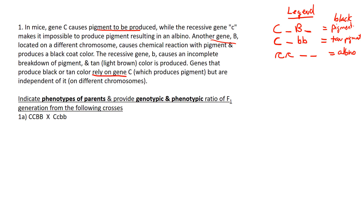It says that genes producing black or tan rely on gene C — so I put these two together in my legend. They are independent of each other, found on a different chromosome, but depend on capital C for pigment. That's the legend here. This is probably the most difficult part of this question. You will see questions like this on your final and probably on your unit 5 exam as well — so practice interpreting the legend.